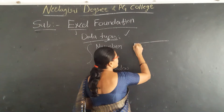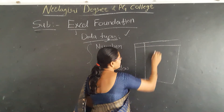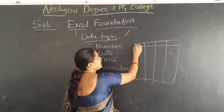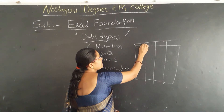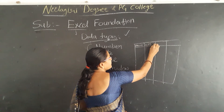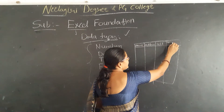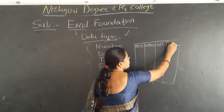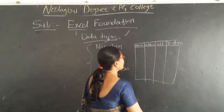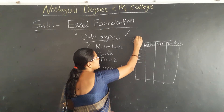For example, we are considering a table format with student data. If you want to store student information, we take the name of the student, the address of the student, the cell number of the student, and the date of joining. This type of information will be stored in the Excel sheet.